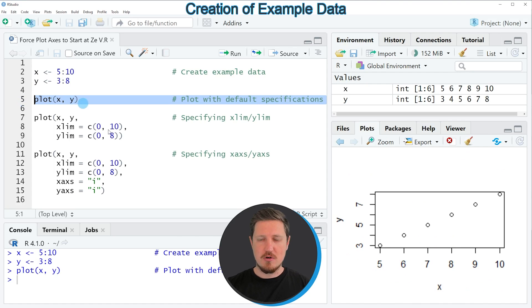If you run line 5 of the code you can see at the bottom right that we have created a new scatterplot which is showing our six data points in our vectors X and Y. However you can also see that the X and Y axis do not start at zero but they start at the lowest point in our data.